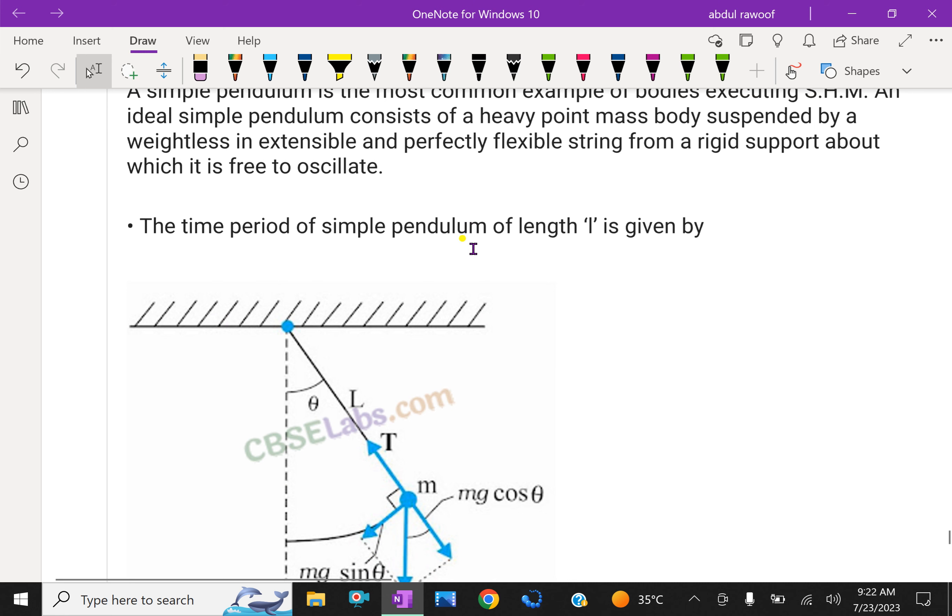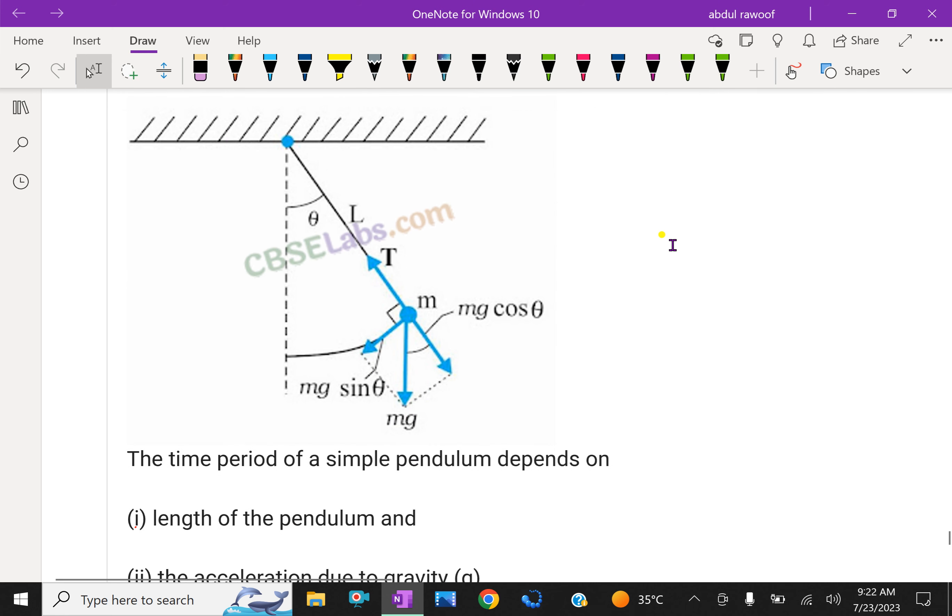The time period of simple pendulum of length L is given by—look here first. Here the fixed point is the vertical position here. Now the bob is here, that mass, it is in some position other than the mean position. Then the mass component is Mg cos θ along the string and perpendicular to the string is Mg sin θ. Here M in vertical is Mg—Mg means force.